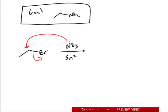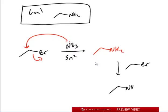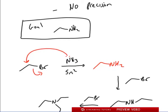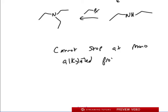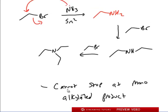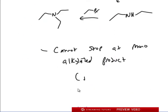This is an SN2 reaction, so the NH3 comes in and the Br leaves, and we wind up getting an NH2 — that's ethylamine, which is our goal. The problem is it won't stop there. Once it comes in, there's nothing stopping it from doing it again and again, so you wind up getting diethylamine and triethylamine as well. Because you can't control this and can't stop at the mono-alkylated product, this is a poly-alkylation issue — and that's the major problem with this reaction.